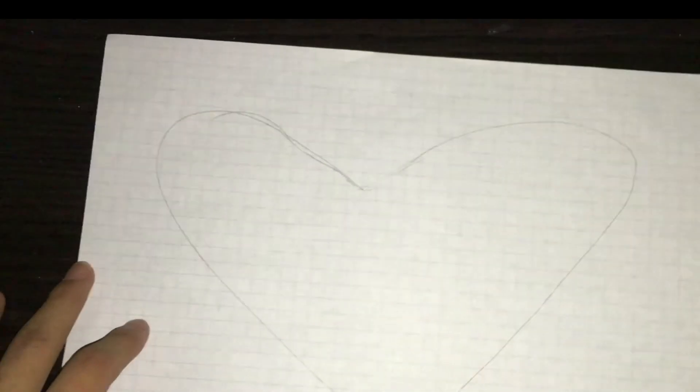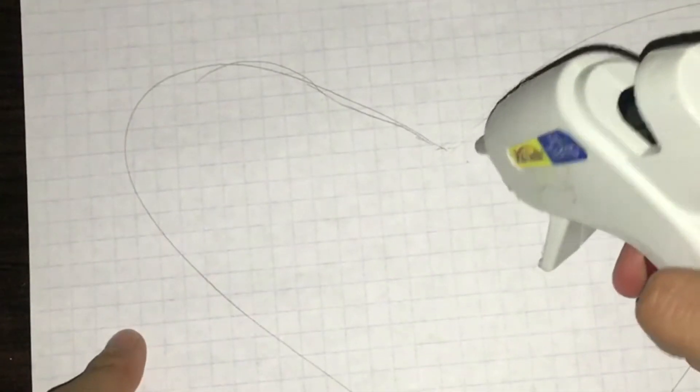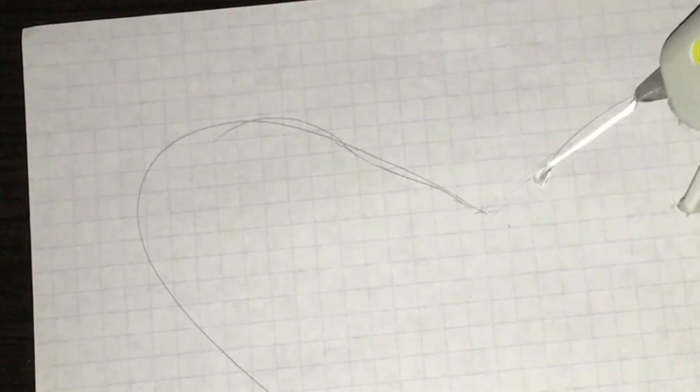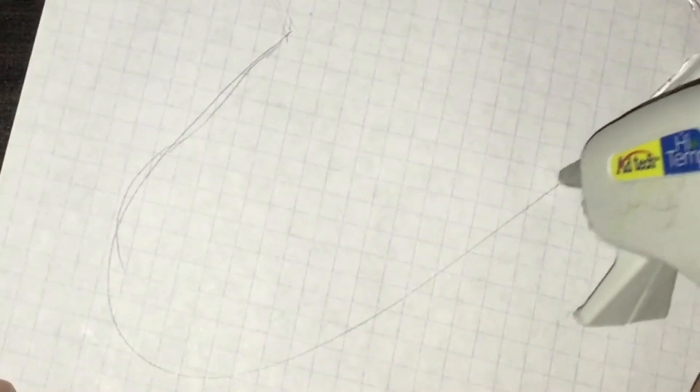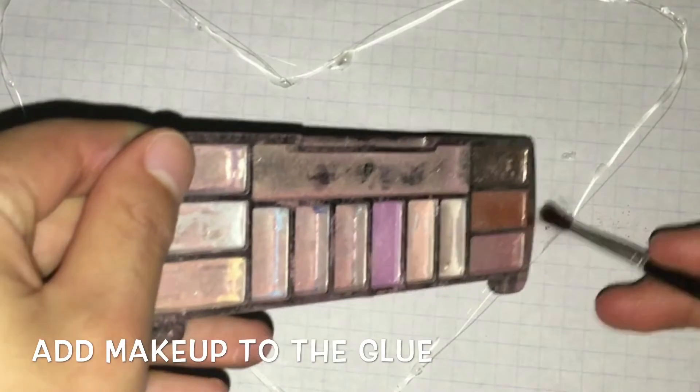When you're done drawing the heart, you need to get your glue gun and trace the heart or anything that you drew. Trace that with the glue gun or glue if you don't have a glue gun. From that on, you will need to get your makeup palette that could be ordinary.